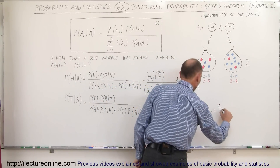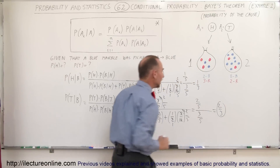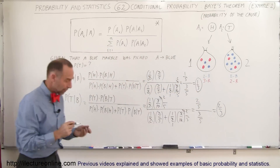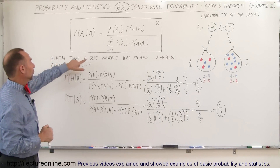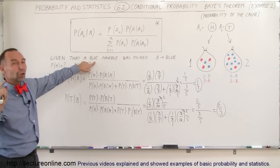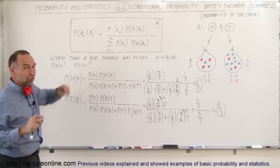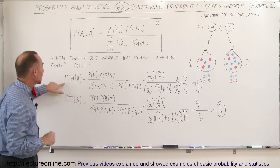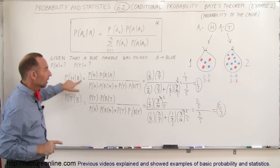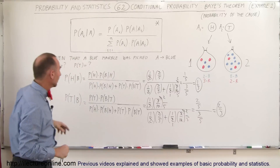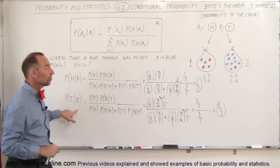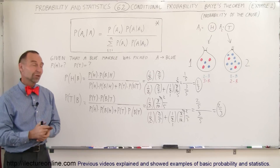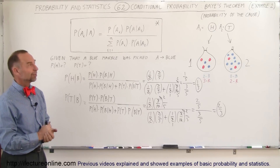That reduces to 2 thirds. The answers add up to 1, which is exactly what we expected. So, if we picked a blue marble but don't know which bag it came from — either bag 1 or bag 2 — the probability of having tossed heads is 1 out of 3, and the probability of having tossed tails is 2 out of 3. And that's how Bayes' Theorem is used in a very interesting way.